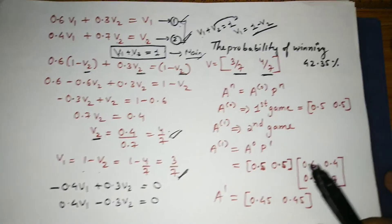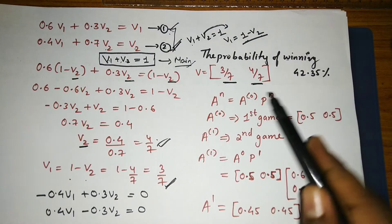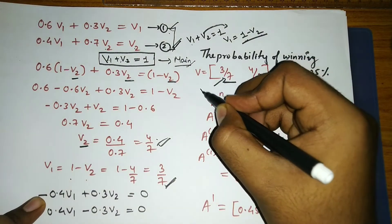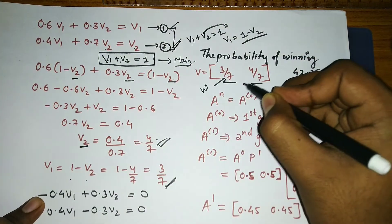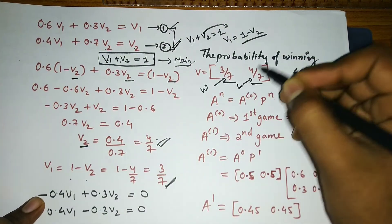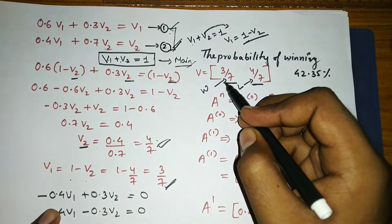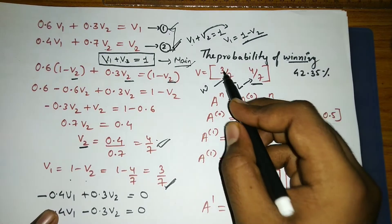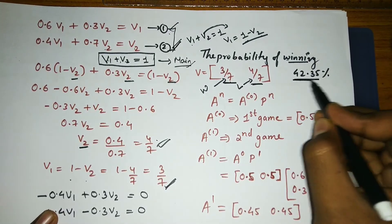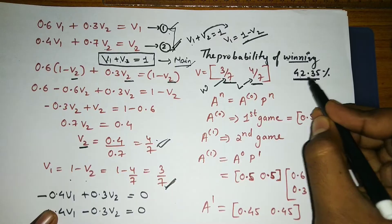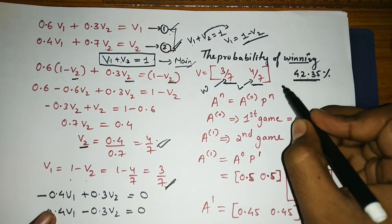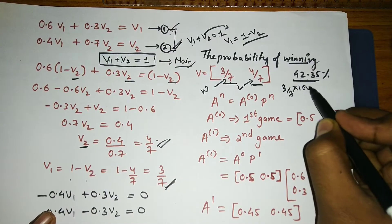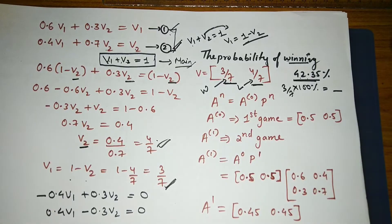So we have the fixed probability vector. V1 denotes winning and v2 denotes losing. The long-run probability of winning is v1 = 3/7, which as a percentage is approximately 42.86%.